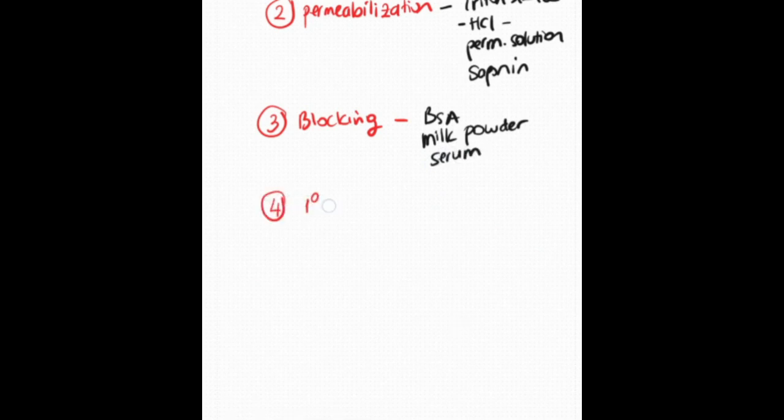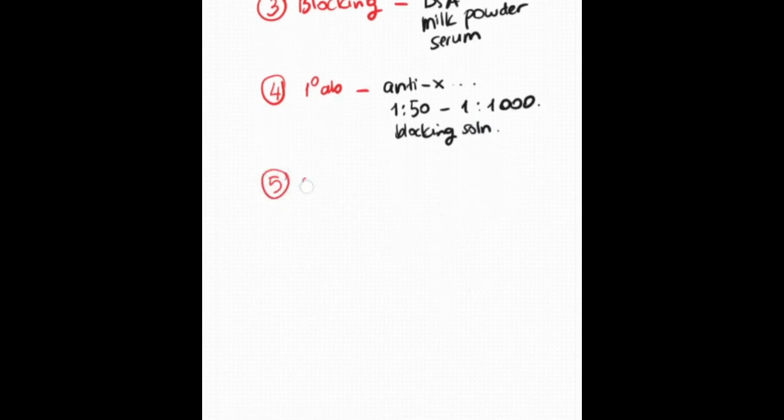Then we add the first primary antibody, which is called anti-your protein. You can dilute it 1 to 50 to 1 to 1000 in blocking solution.